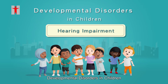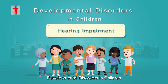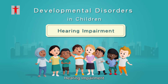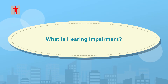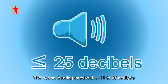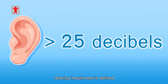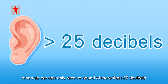Developmental Disorders in Children: Hearing Impairment. What is hearing impairment? The normal hearing threshold is minus 10 to 25 decibels. Hearing impairment is defined when an ear can only receive sound of more than 25 decibels.